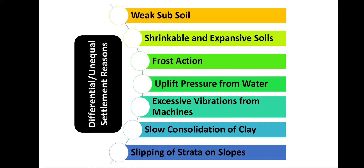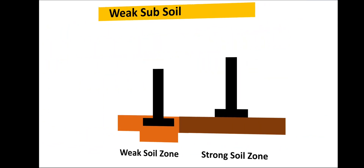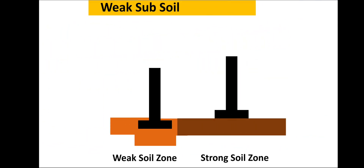Let's see some reasons for differential or unequal settlement: weak subsoil, shrinkable and expansive soil, frost action, uplift pressure, excessive vibration from external machinery, slow consolidation, and slipping of strata on slopes. In the case of weak subsoil, if the soil in contact with the footing is not strong enough, the footing or foundation may settle — weak soil lacks the strength to support the loaded footing, causing differential settlement.